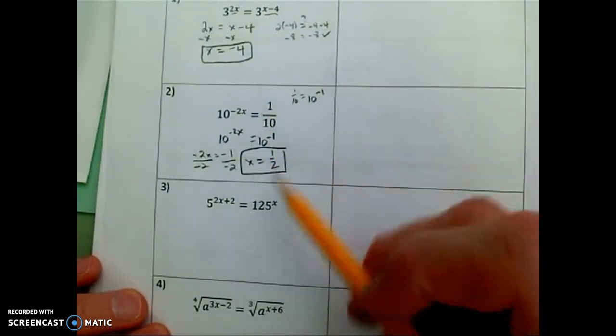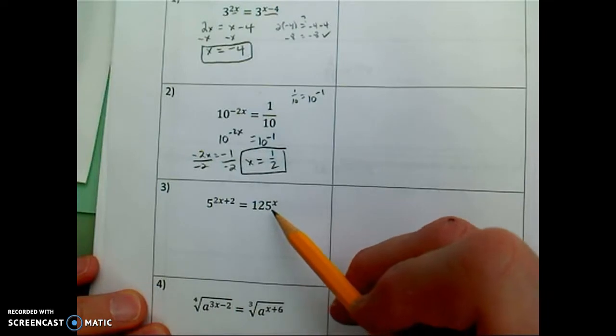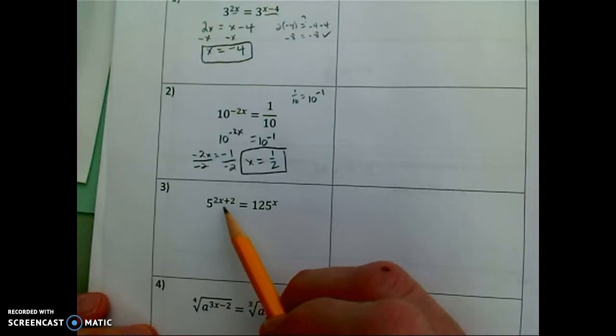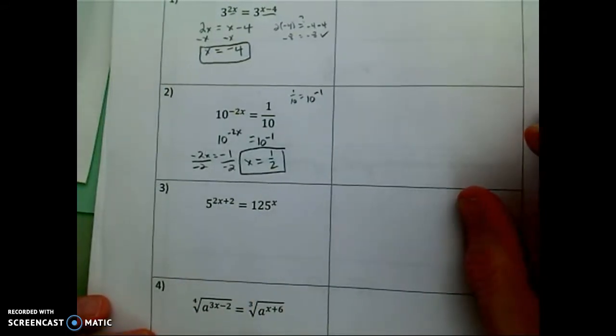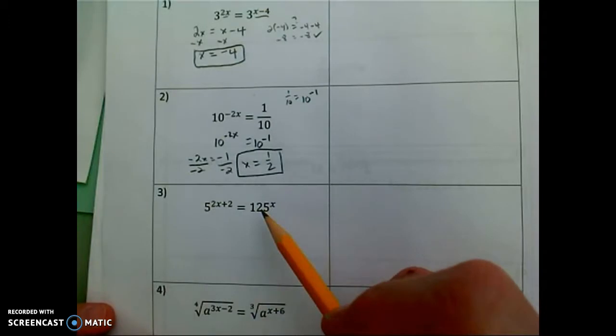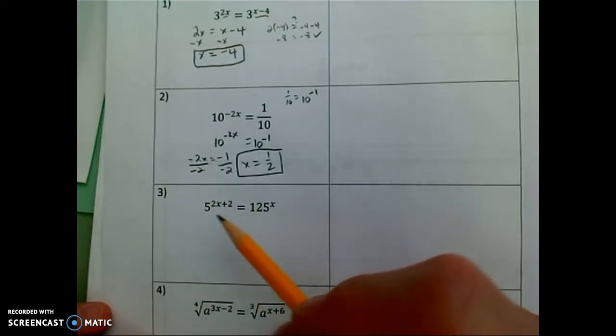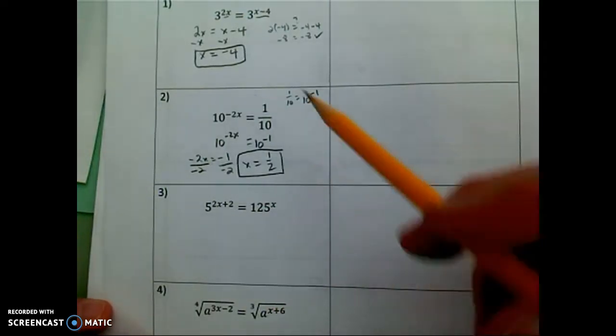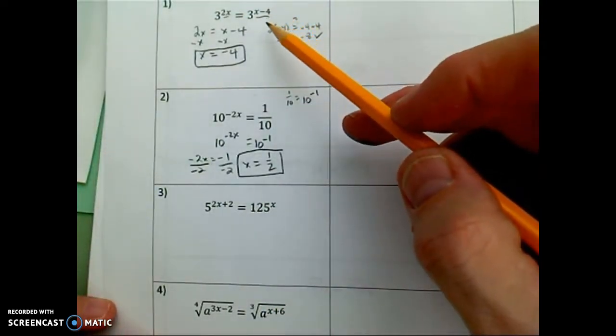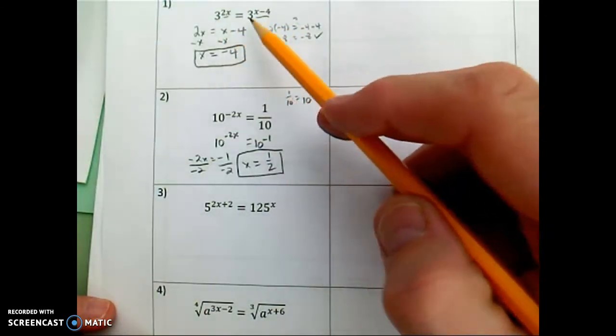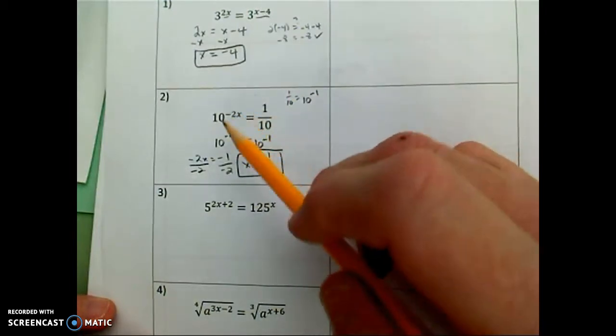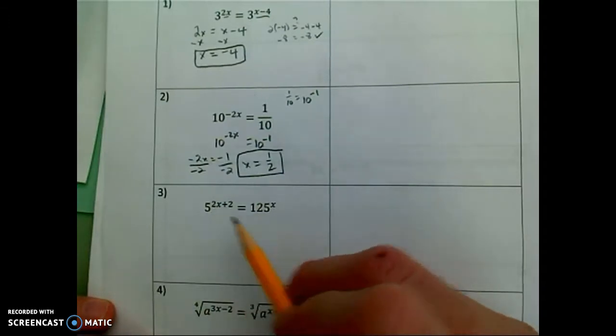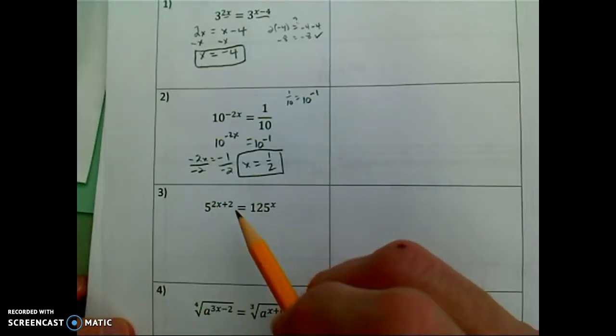So let's use that same tactic. On the right hand side 125 to the x so this is an exponential expression. The left hand side 5 to the 2x plus 2. So I have an exponential expression equal to another exponential expression. That's great. So I know at some point I'm going to set the exponents equal to one another. But I can't do that just yet. Why not? If we take a look back at our original equation, number 1 example, 3 to the something equals 3 to the something. The bases were the same. In our number 2 example we rewrote the right hand side and had the same base. Here I don't have the same base.